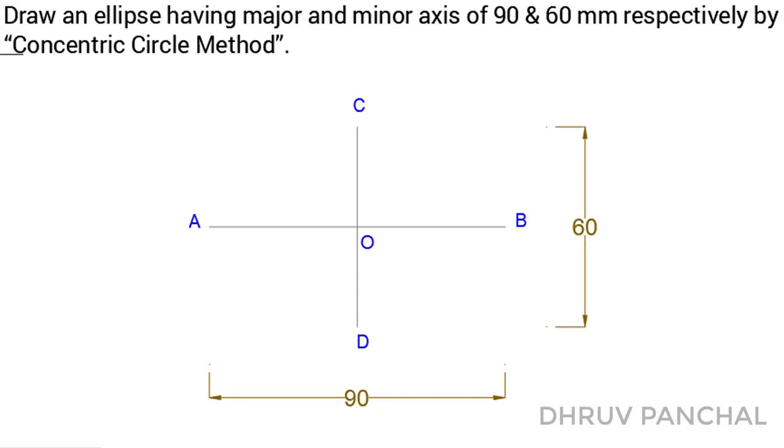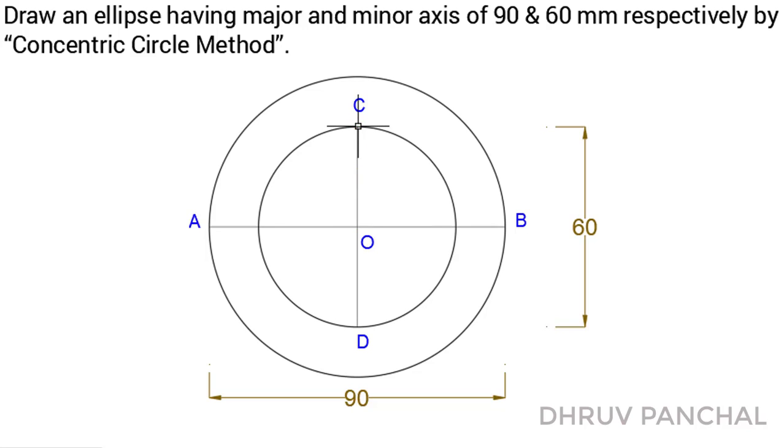Now, with the help of compass, from point O as a center, draw a circle of 90 mm diameter and again from point O as a center, draw another circle of 60 mm diameter.